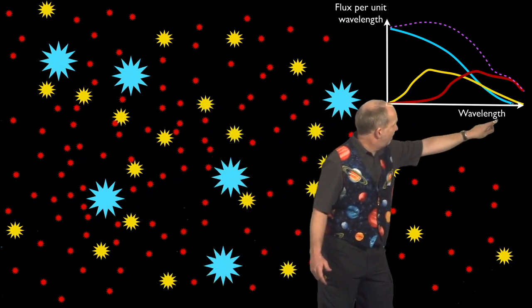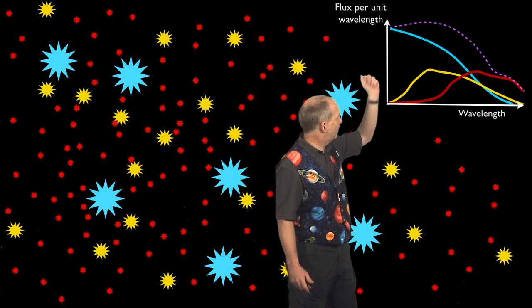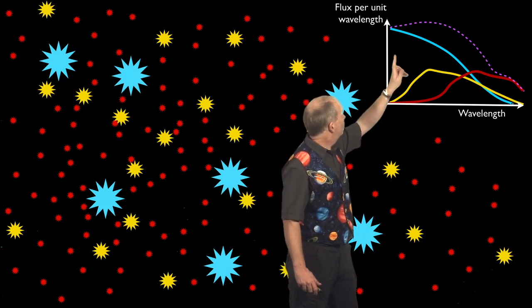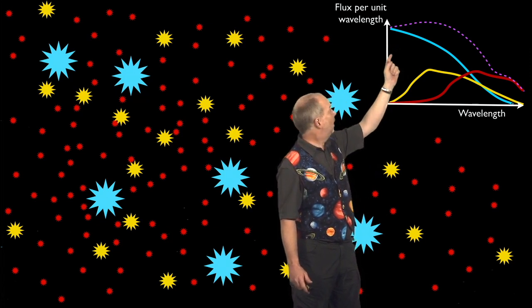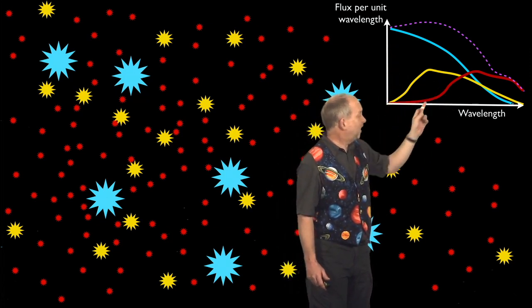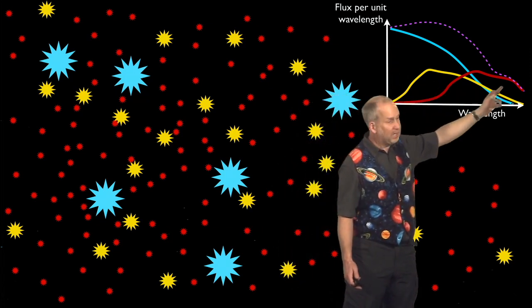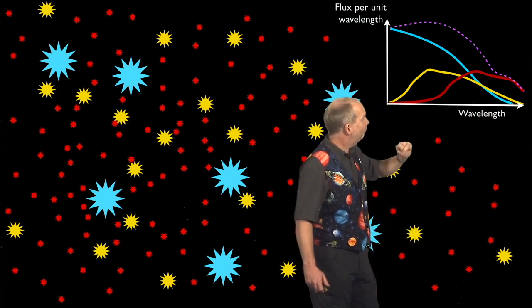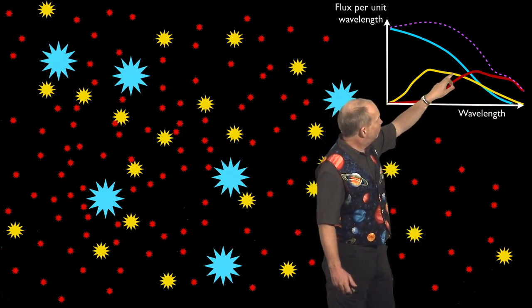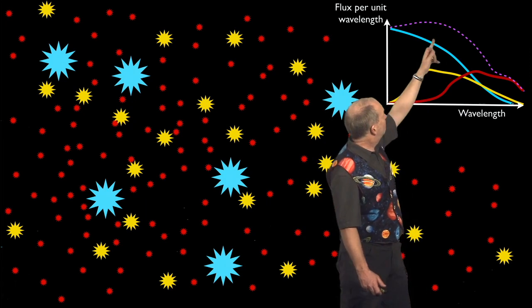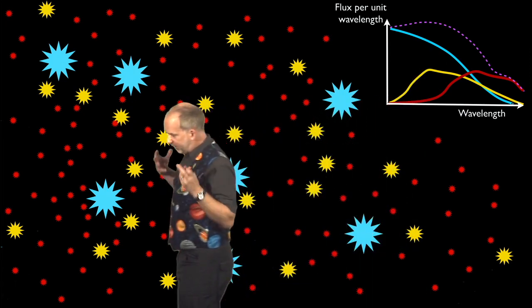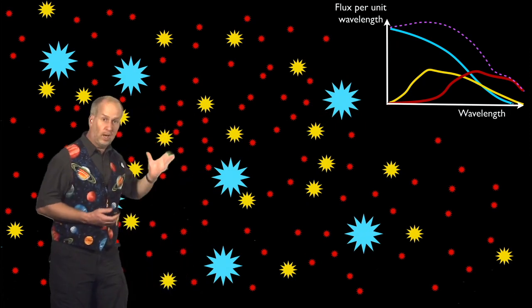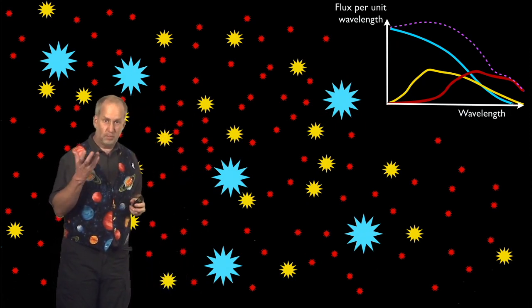So we'll get a spectrum that looks something like this. Here's wavelength, and here's the energy per unit wavelength, the flux per unit wavelength. The blue stars have a spectrum like this, so it peaks down here at short wavelengths, whereas the yellow stars peak at yellow wavelengths, and the red stars peak out at red wavelengths. If you add up these three spectra, you get the purple line, which peaks in the blue and the yellow. So if a galaxy is very young, that's the color you expect it to be, a somewhat bluey-yellowy color.